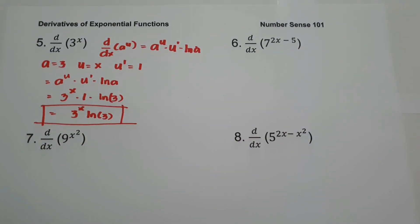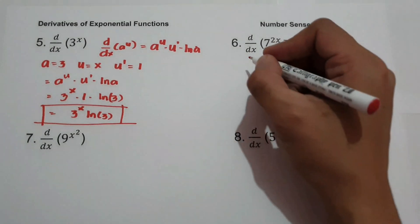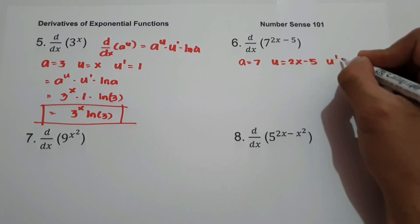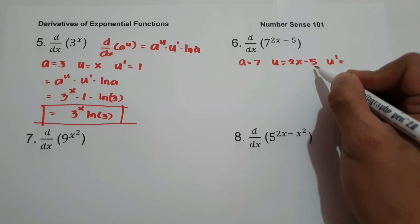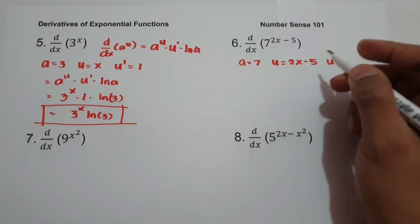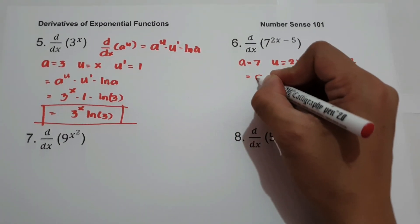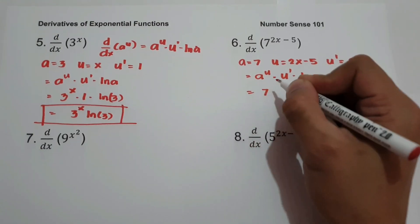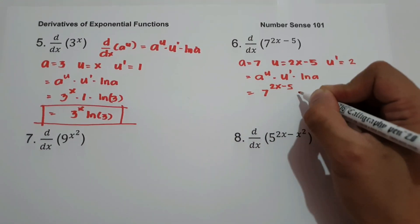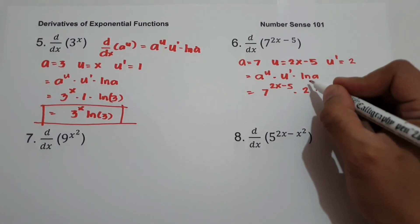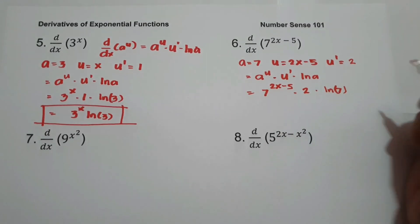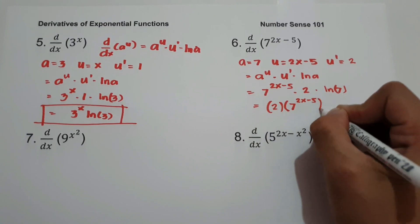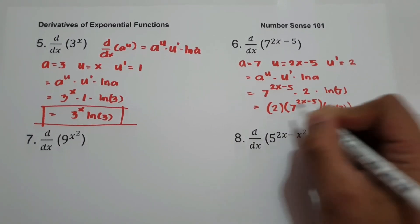On number 6, what is the derivative of 7 raised to 2x minus 5? The value of a is 7, u is 2x minus 5, and u prime is the derivative of 2x minus 5. The derivative of negative 5 is 0 and the derivative of 2x is 2, so u prime equals 2. Applying the formula: 7 raised to 2x minus 5, times 2, times ln 7. Our final answer is 2 times 7 raised to 2x minus 5 times ln 7.